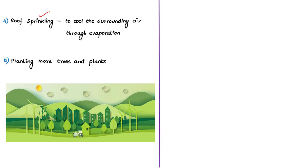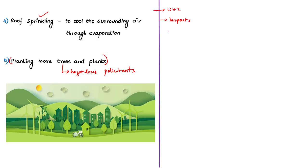Roof sprinkling is another evaporative cooling solution — sprinklers on the roof wet the surface so that air around it cools through evaporation. Finally, one of the simplest solutions is to plant as many trees and plants as possible. Trees are the best absorbers of hazardous pollutants such as oxides of nitrogen, ozone, ammonia, and sulfur dioxide. Planting trees is one of the most effective and simplest solutions to mitigate the urban heat island effect.